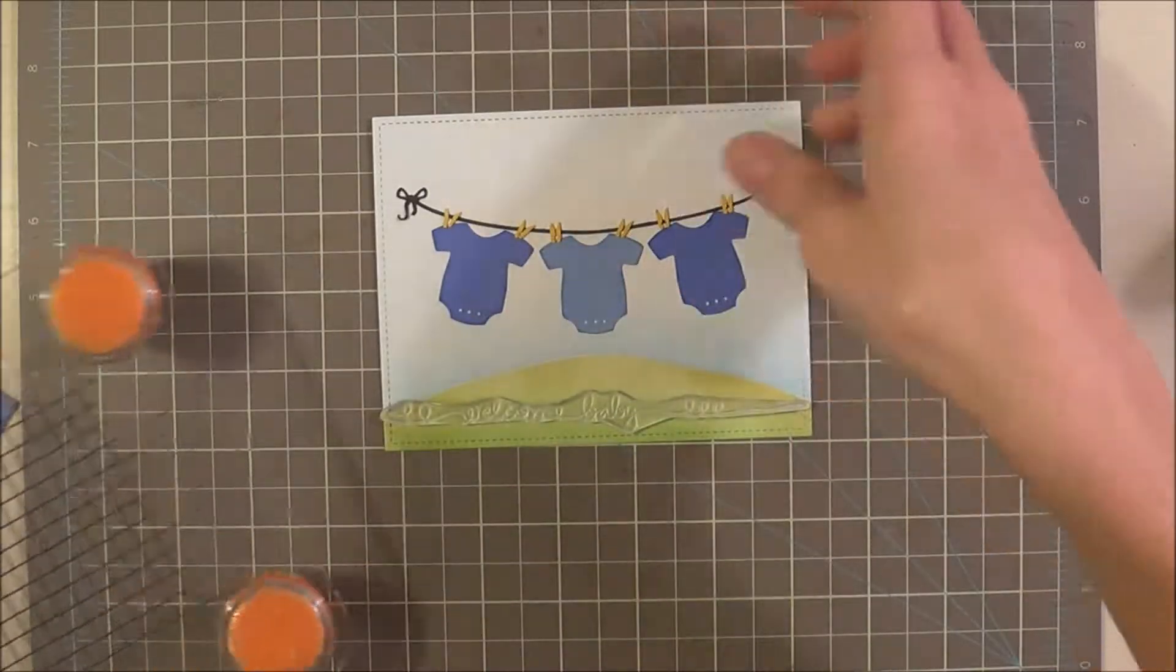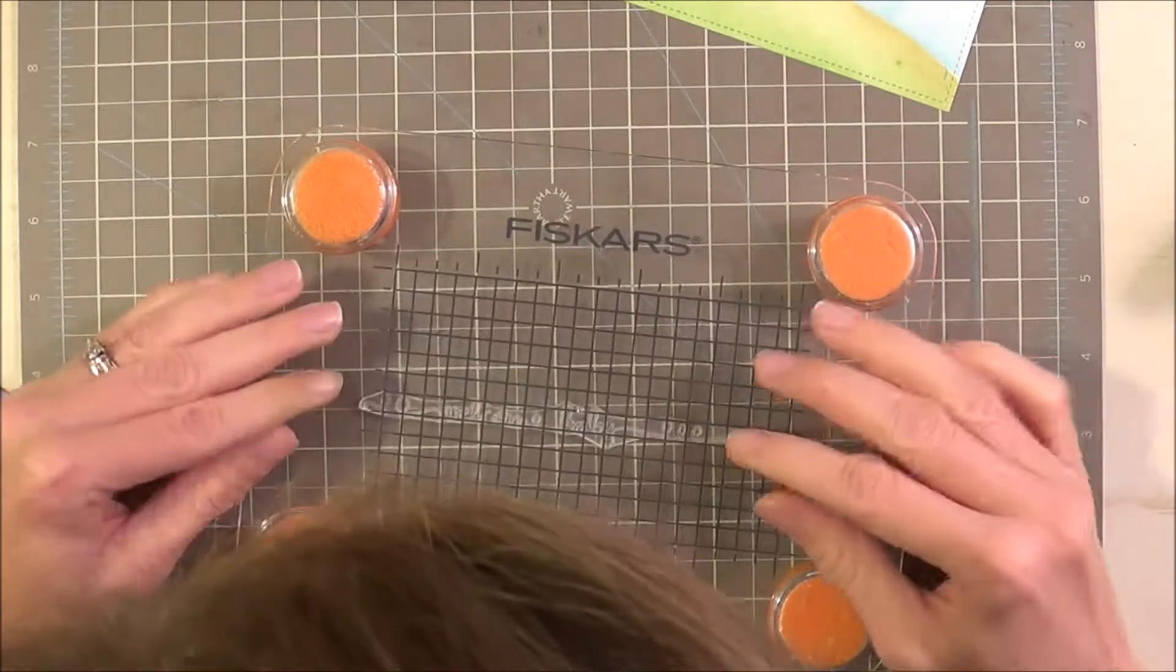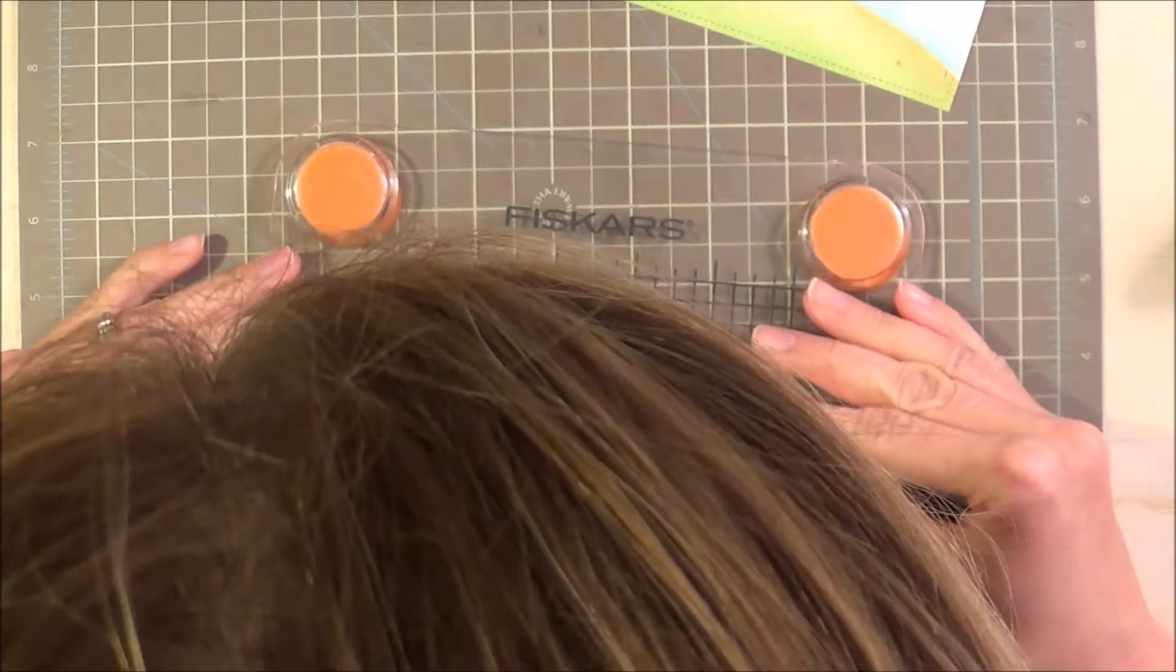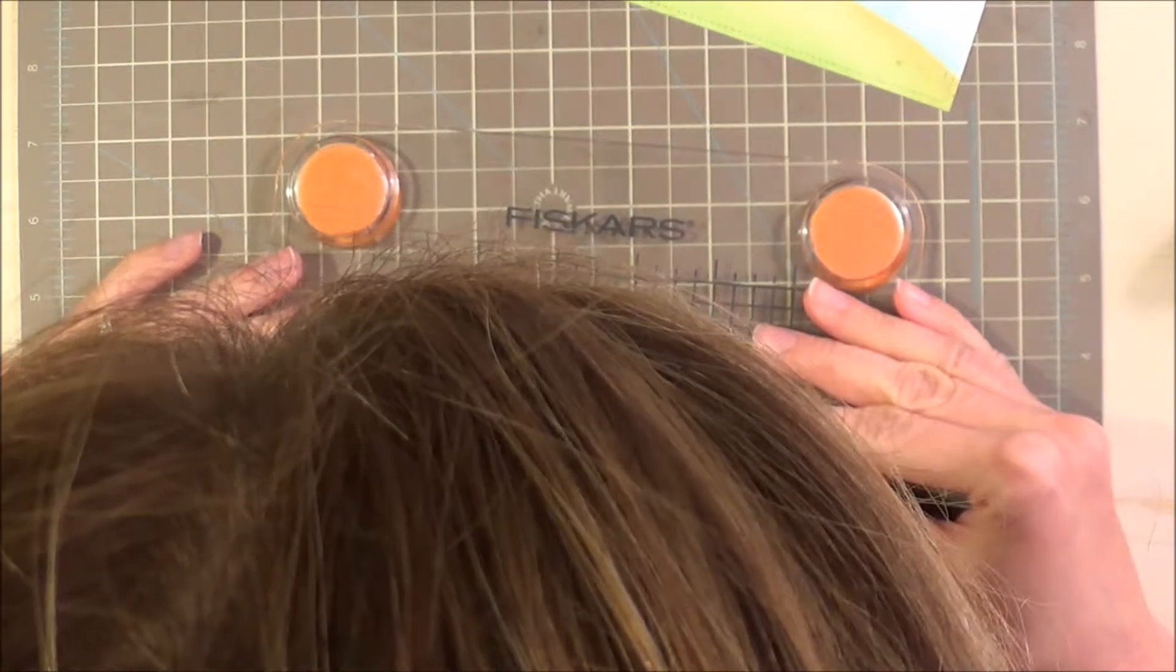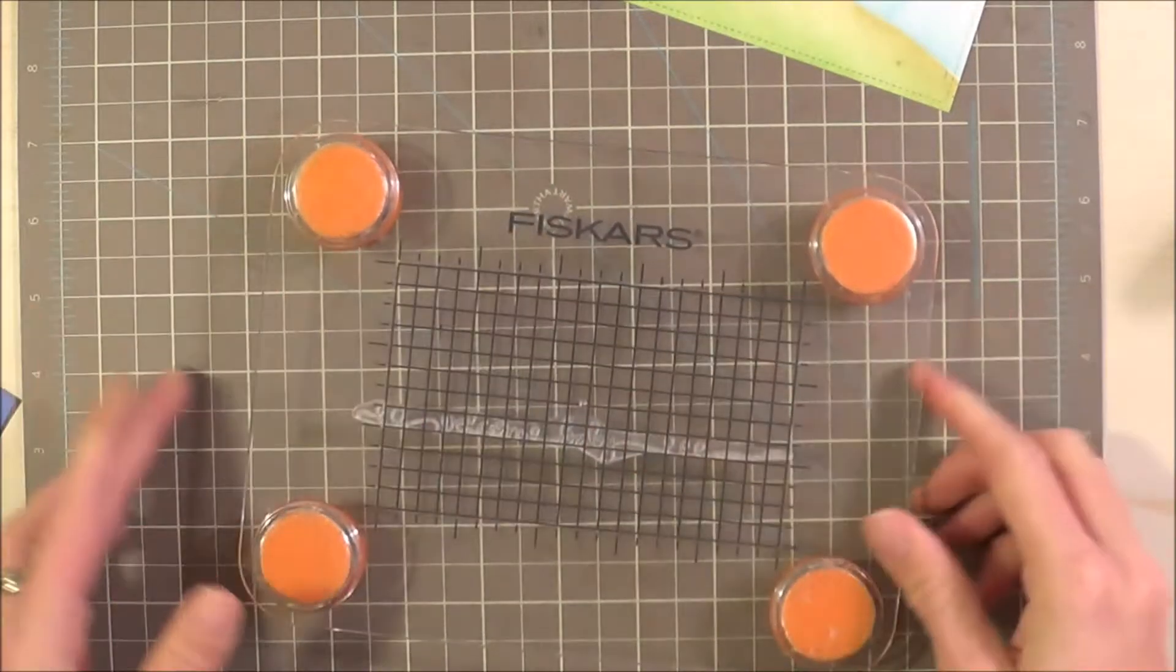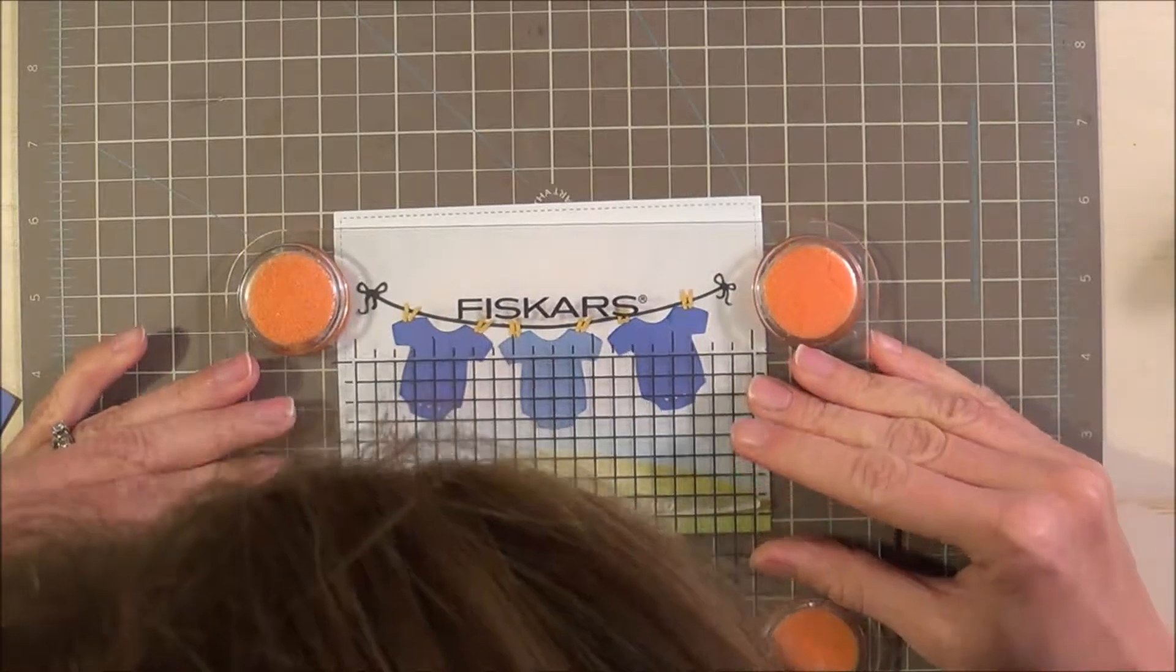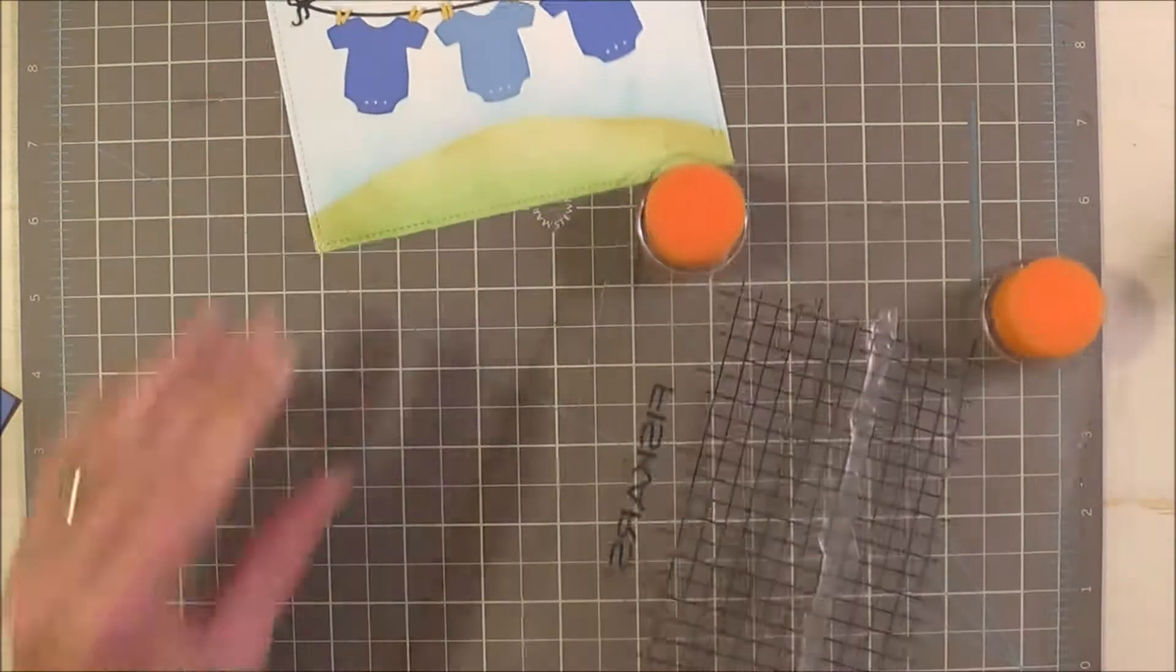I'm going to use my Fisker stamp press. I'm going to move this out of the way. Line this up as much as possible. Press that down. Kind of get an idea of where I would like it on the card. Across the bottom.